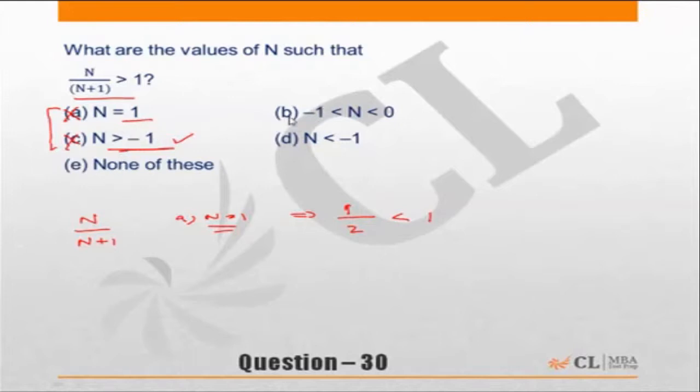Choice B: let's take n = -0.5. Why -0.5? Because it lies within the range. If -0.5 satisfies the equation, it could be the answer. If it does not satisfy, then it has to be incorrect.